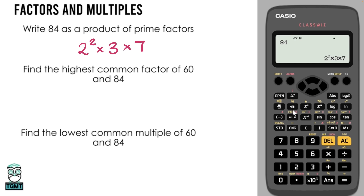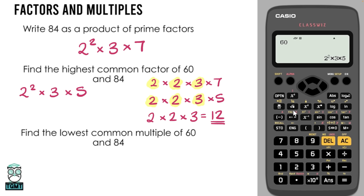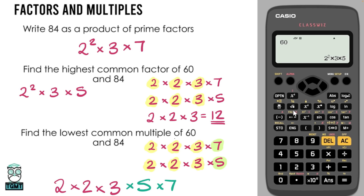We get 2 squared times 3 times 7. We can use that to answer questions about highest common factors and lowest common multiples. For HCF of 60 and 84, we also do the product of prime factors for 60 using the FACT button: 2 squared times 3 times 5. The factors in both give us 2 × 2 × 3 = 12 for the HCF. For the LCM we include the remaining factors: 2 × 2 × 3 × 5 × 7 = 420.